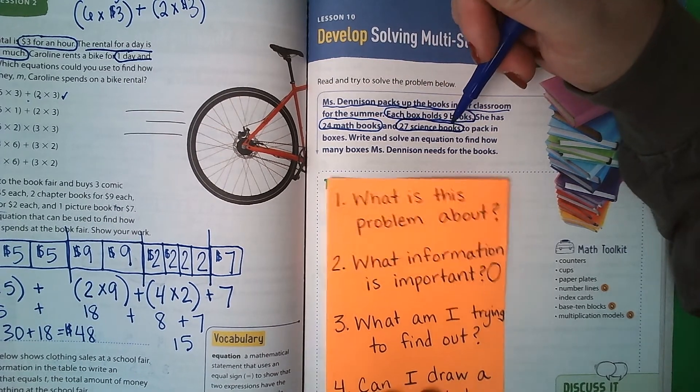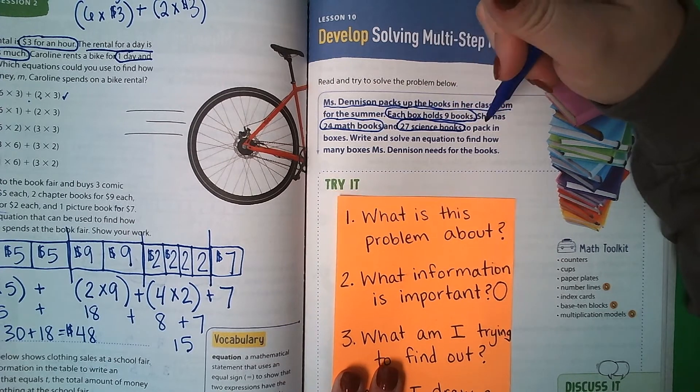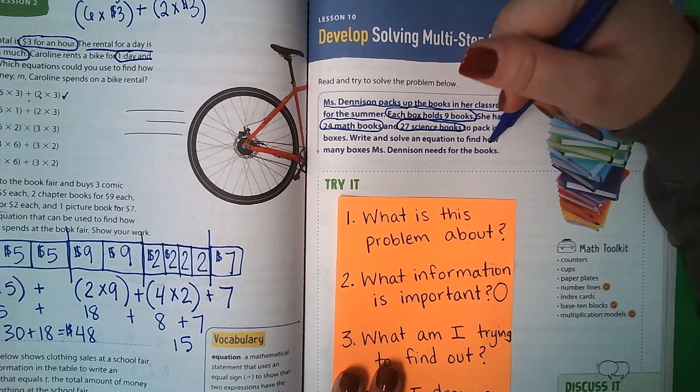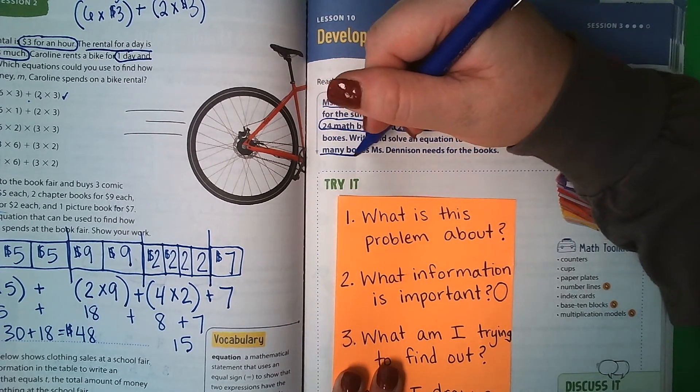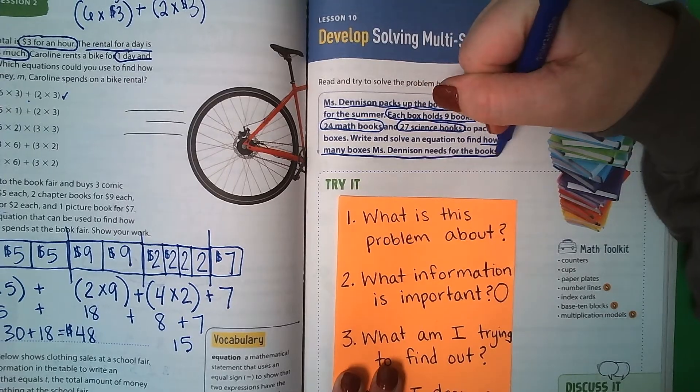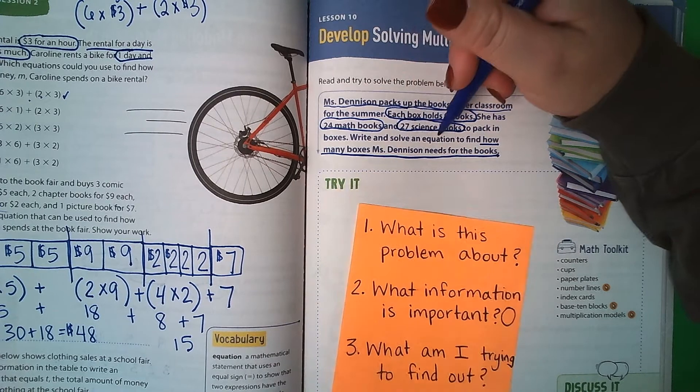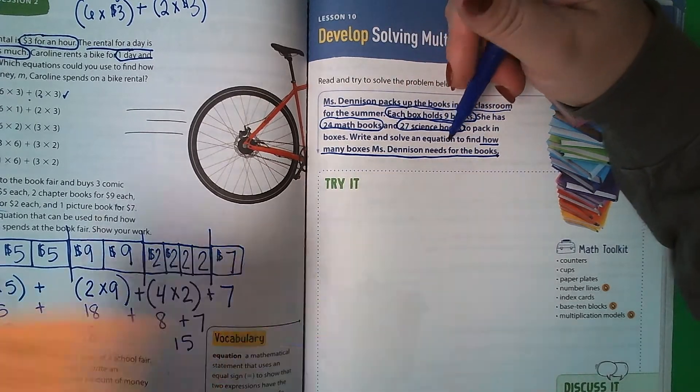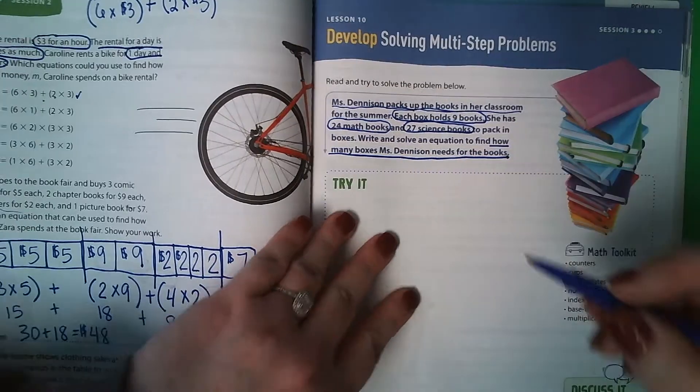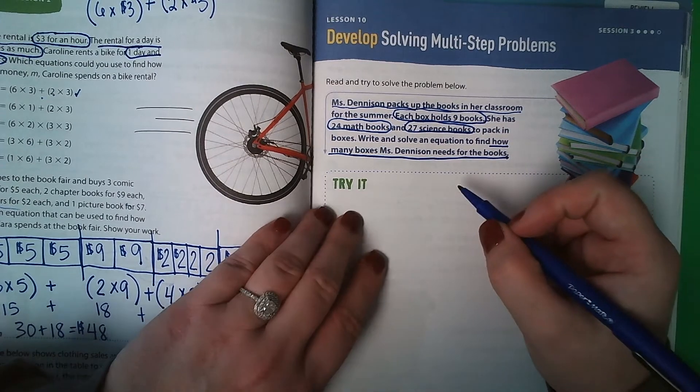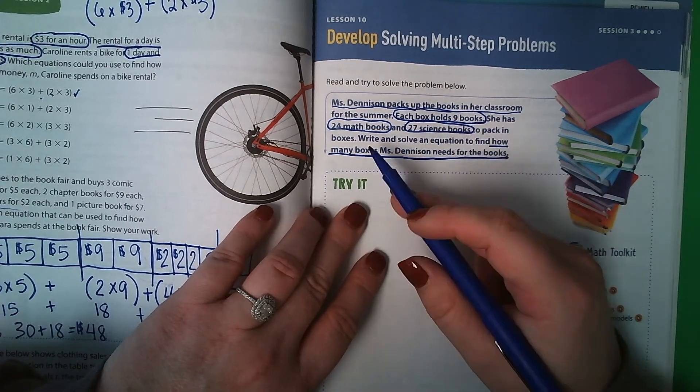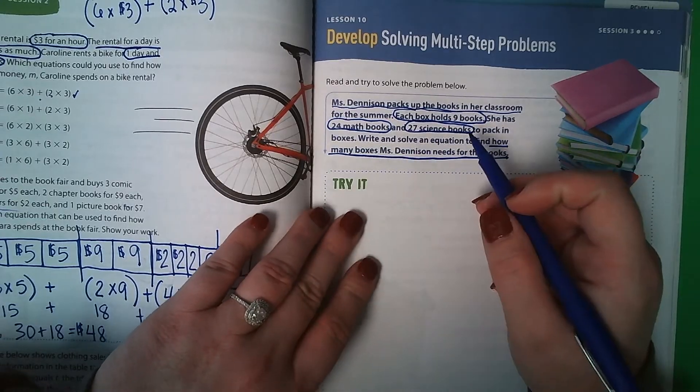What am I trying to find out? Well, I'm trying to find out how many boxes Ms. Denison needs for the books, and can I draw a model? Yes. It tells me to write and solve an equation, but I want to draw a model first. So first, I need to find out how many total books that she has.